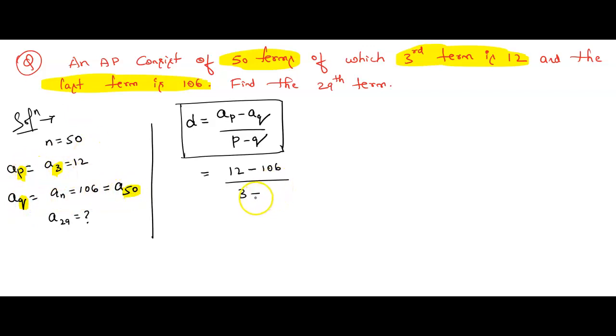In 12, can we subtract 106? No. No means we have to put minus. 106 minus 12, 6 minus 2 is 4, 10 minus 1 is 9, that is 94 by 3. In 3 can we subtract 50? No. No means minus, 50 minus 3 is 47.